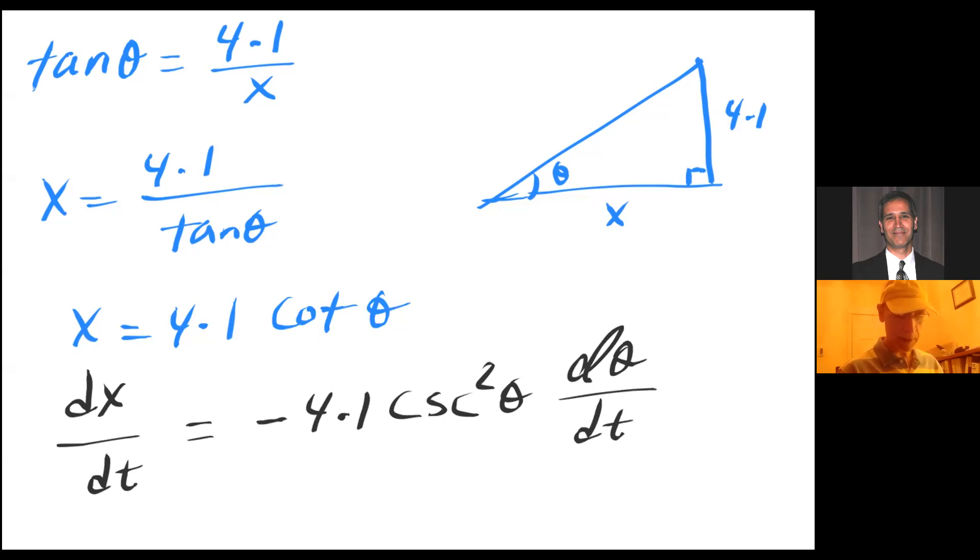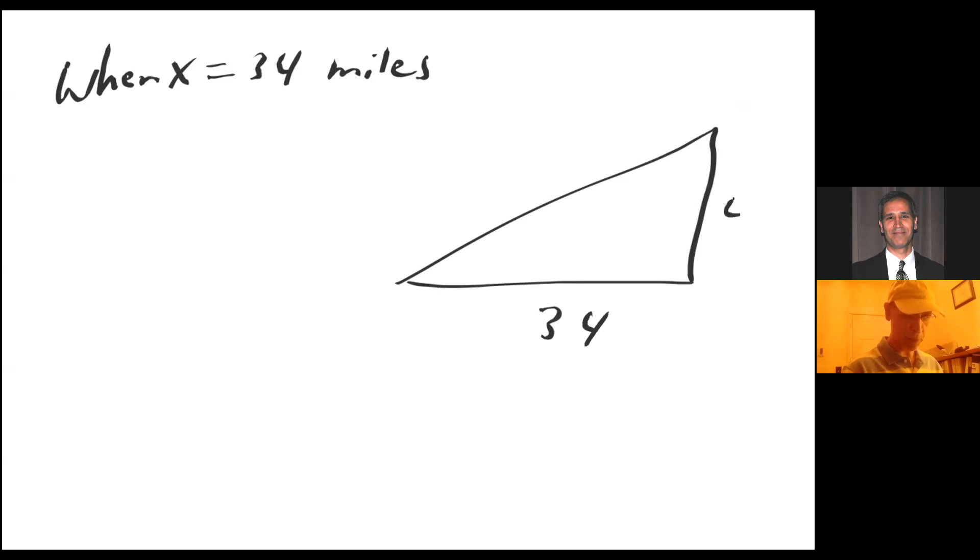And we are told we want to find dx/dt when x is 34 miles. So when x equals 34 miles. So this is 34. This is 4.1. And let's call this y. And what is y? So using Pythagorean theorem. So I have 4.1 squared plus 34 squared. And take square root of that. I am getting 34.24631367.